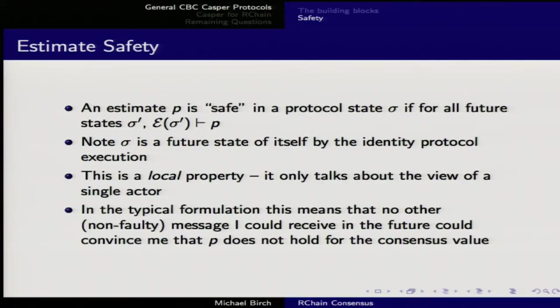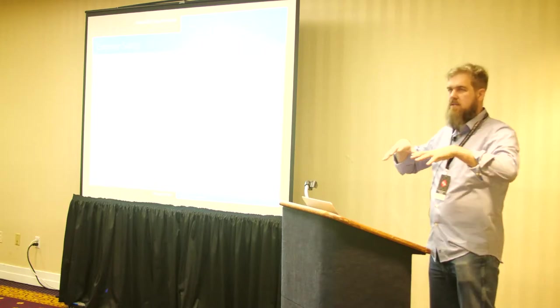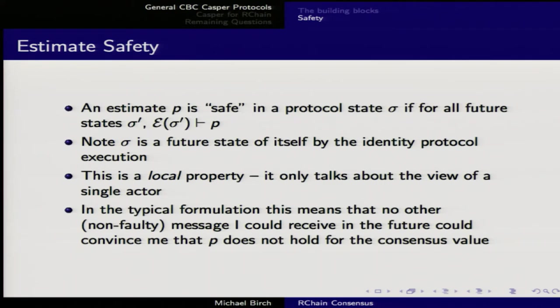Equivocating — saying one thing to one part of the network and something else to another — is a Byzantine fault. An estimate is safe in a protocol state Sigma if, for all future states Sigma Prime, the estimate gives the same value. There's no way that, no matter what other messages you see or send, that estimate can change. It's a local property, so each node can know that if consensus is ever reached, it will be on this value.